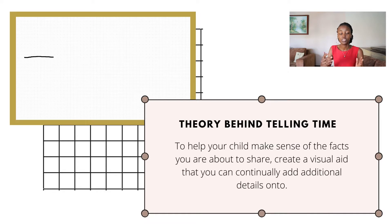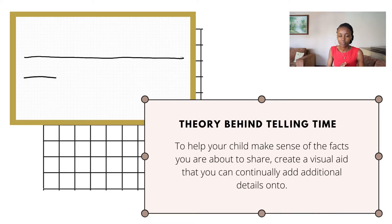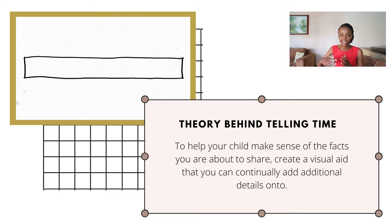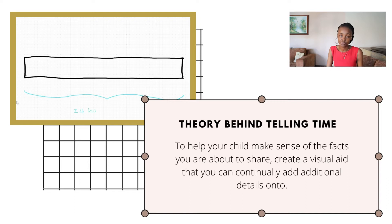Before teaching your child how to tell time, there are four main facts that your child needs to understand. For them to make sense of these facts, you will need to use a visual aid. You might want to draw a shape — maybe a rectangle or a circle — that will represent a 24-hour day. As you move through the facts, keep adding details to the shape to help them make sense of the theory you are sharing.